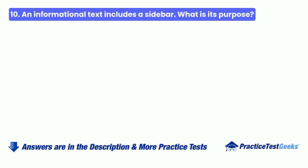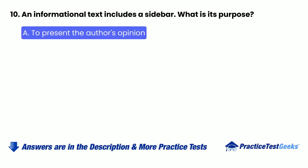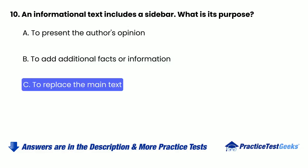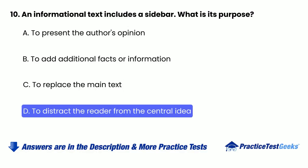10. An informational text includes a sidebar. What is its purpose? A. To present the author's opinion. B. To add additional facts or information. C. To replace the main text. D. To distract the reader from the central idea.